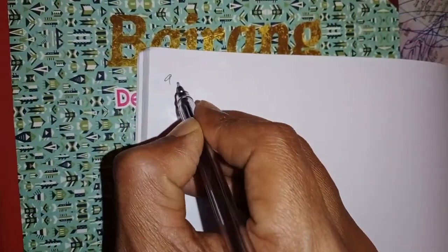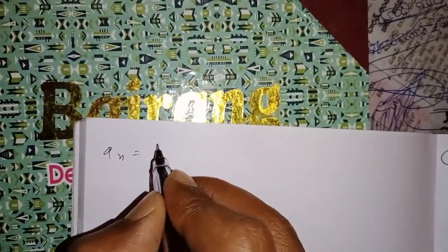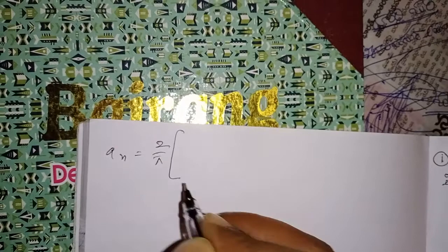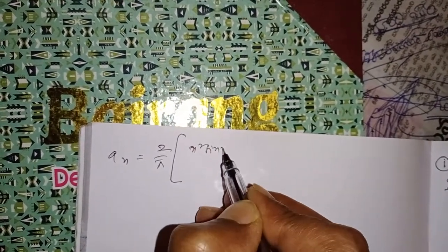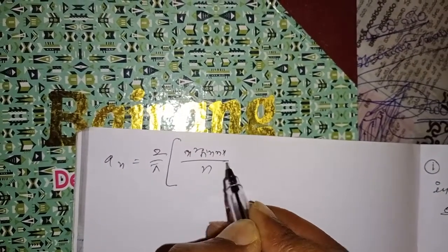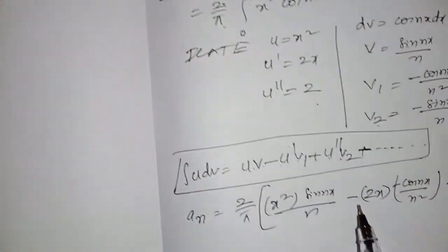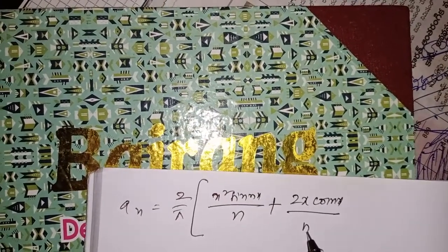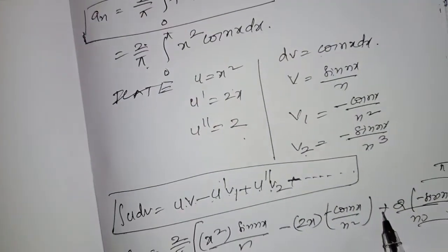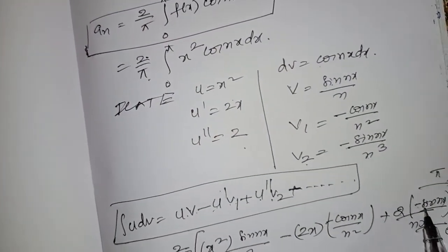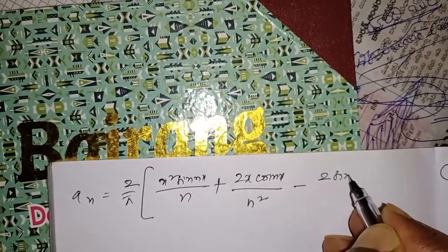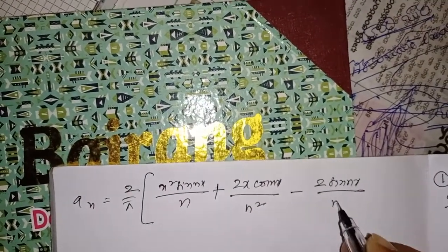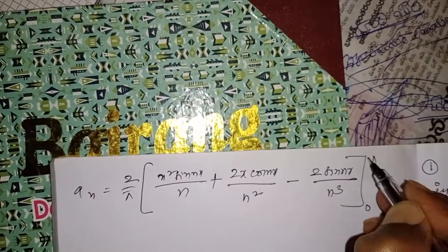Simplifying the signs — minus into minus gives plus — an = (2/π) · [x²·sin(nx)/n + 2x·cos(nx)/n² - 2·sin(nx)/n³] from 0 to π.